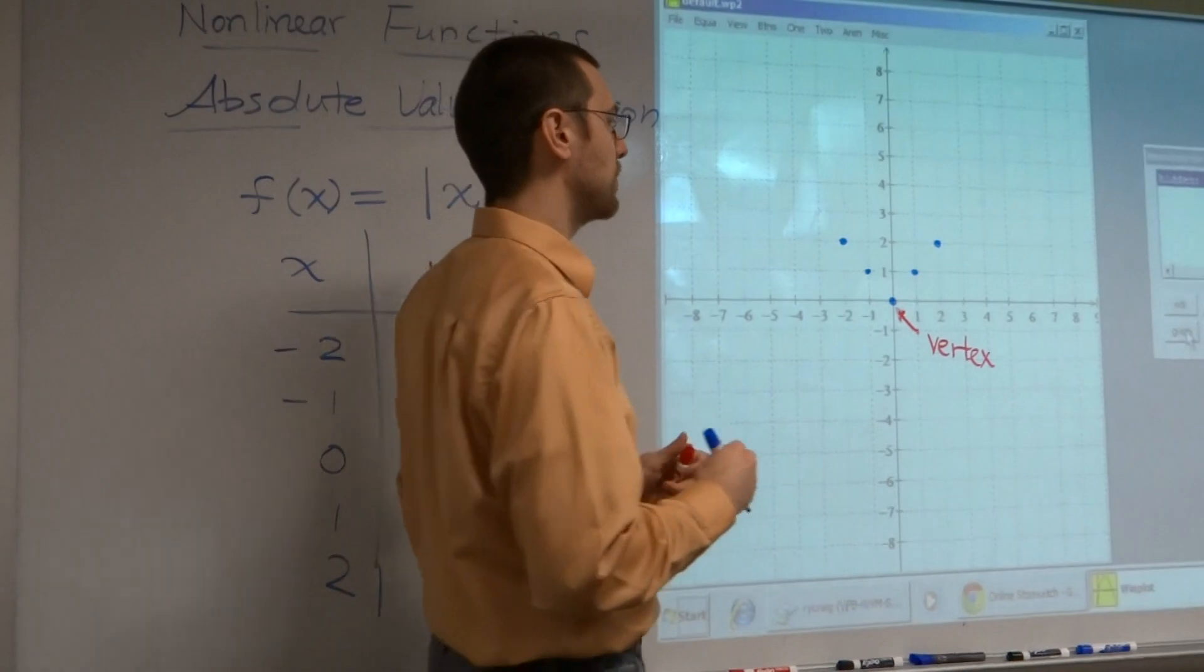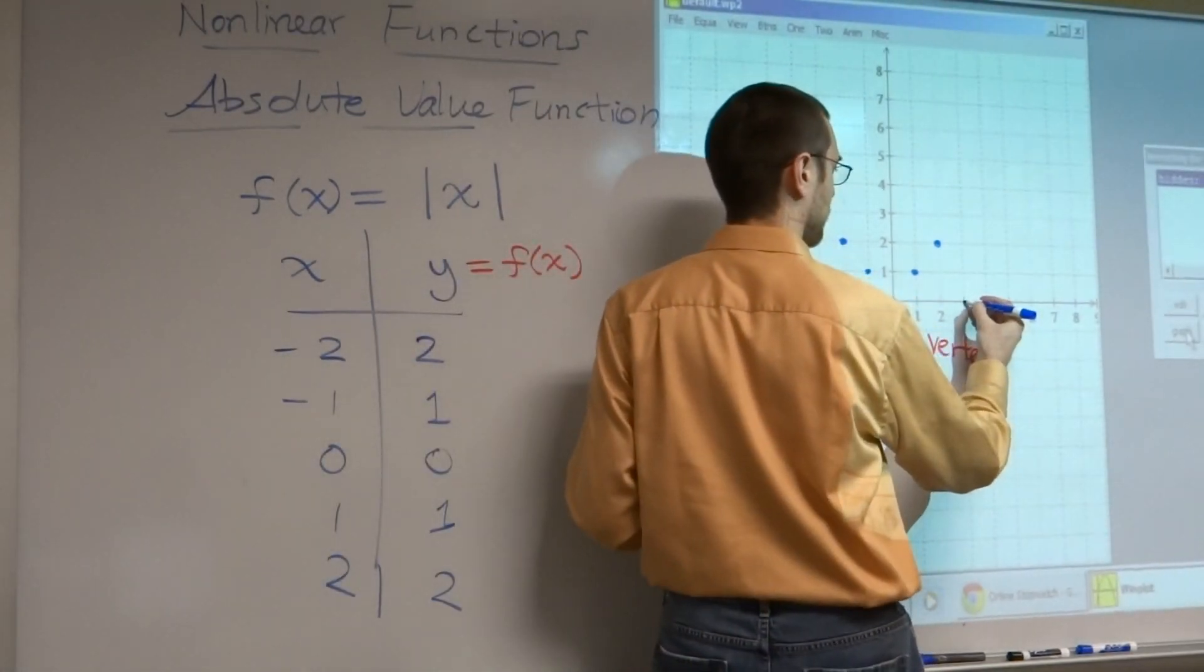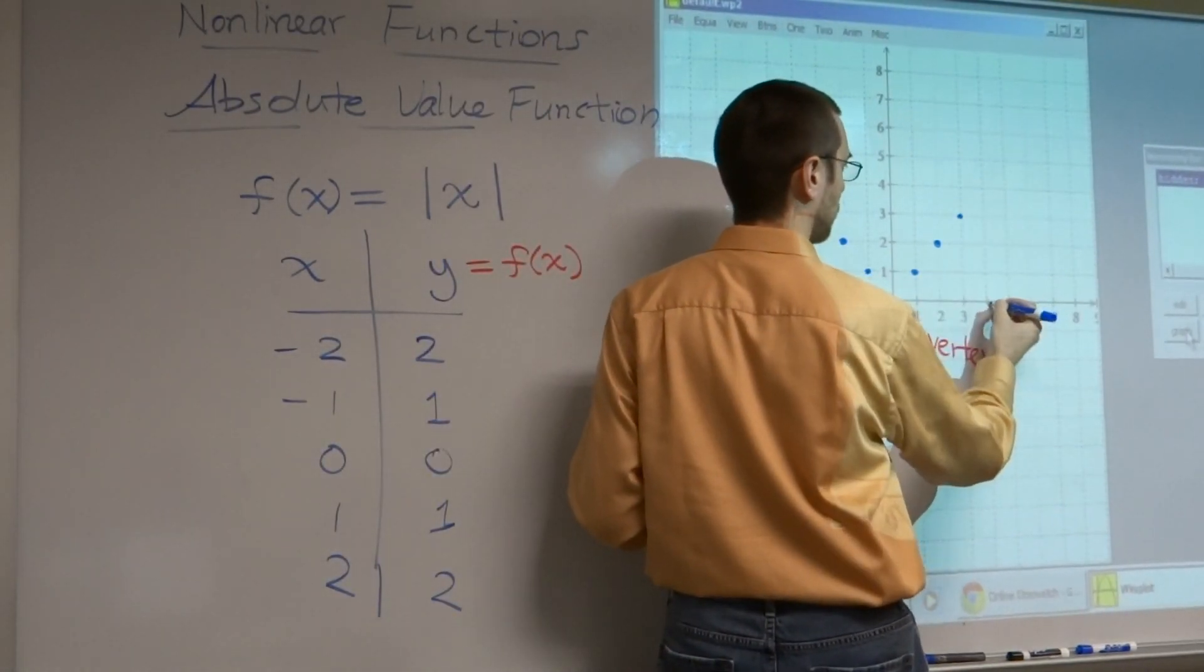Now, what if we kept going with this? What's the absolute value of three? Three. Three. What's the absolute value of four? Four.